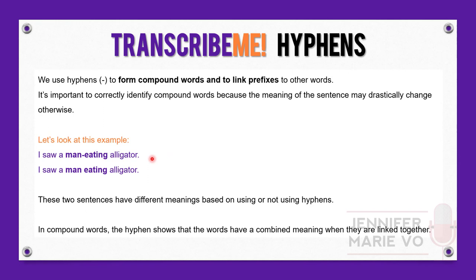Consider: "I saw a man-eating alligator" versus "I saw a man eating alligator." These are very different. In the first sentence, the hyphen combines "man" and "eating" to make a compound adjective, meaning an alligator that eats men. Without the hyphen, "I saw a man eating alligator" would mean you saw a man eating alligator meat. These two sentences have different meanings based on using or not using a hyphen.